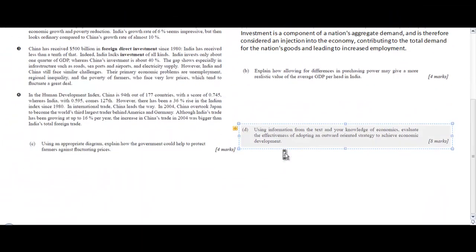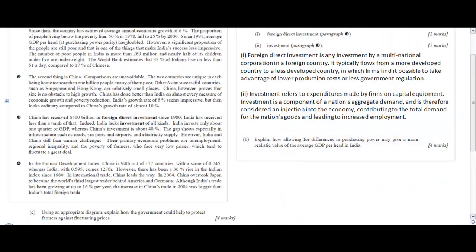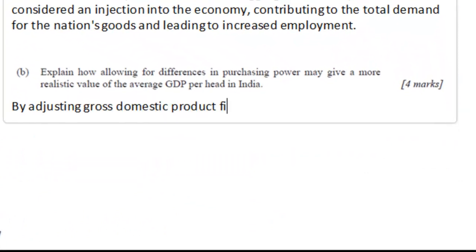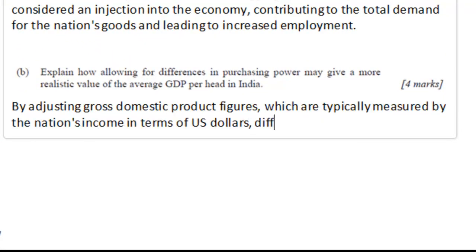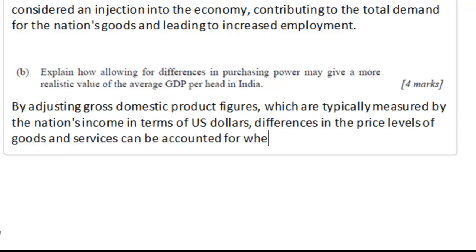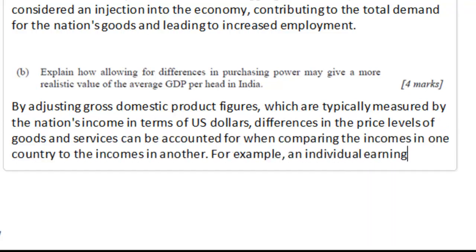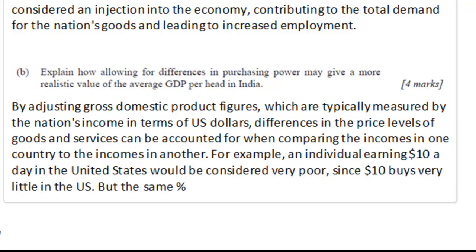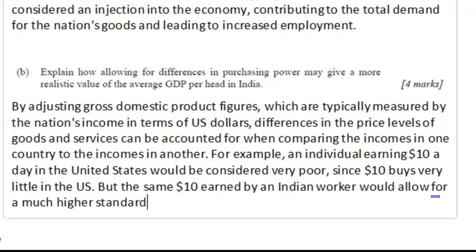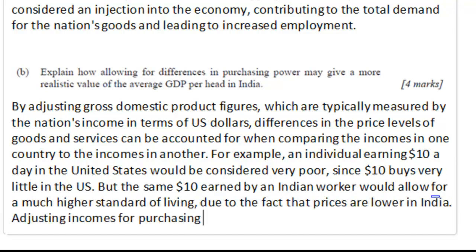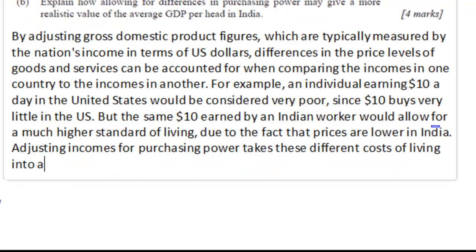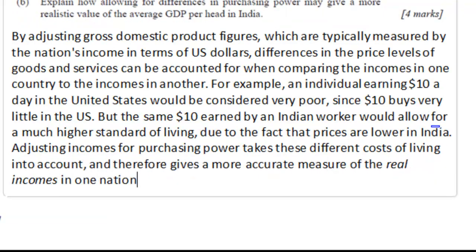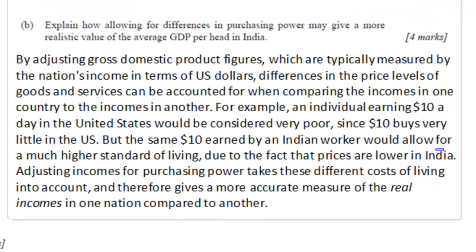Let's move on to Part B. Unlike in many Part B data response questions, we are not asked to draw a graph. This question focuses on a particular concept referred to in the extract: the purchasing power parity measure of GDP. This is a minor portion of our syllabus but it has some very important implications. Purchasing power parity refers to the income of a nation's people adjusted for the costs of living in that nation, to give us a more accurate measure of the well-being of people in a particular country. Pause the video and read over this answer before I move on to Part C.